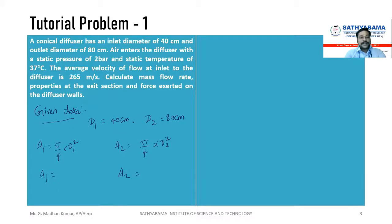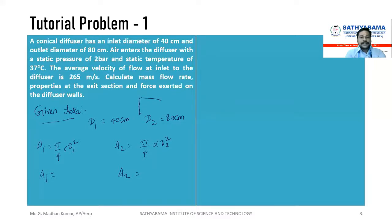First write the data: d1 = 40 cm, d2 = 30 cm. Find A1 = (π/4)·d1² and A2 = (π/4)·d2². These areas will help you find the mass flow rate. For a subsonic diffuser, we need to decrease the velocity. To decrease velocity in subsonic flow, we require a divergent passage — increasing diameter — which is what we have here.